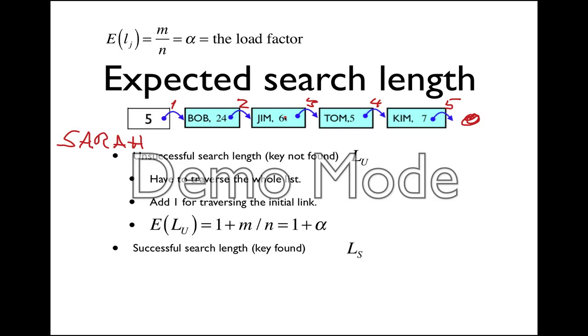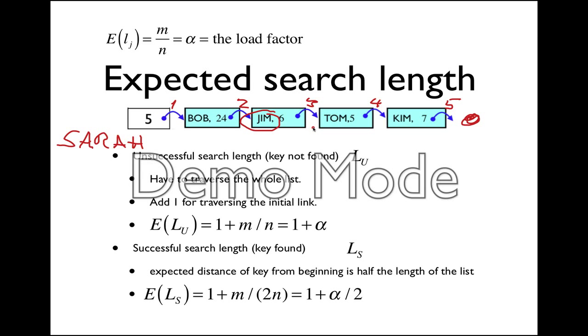What about the successful search? The successful search is for something like Jim. For Jim we just have to follow two pointers, and on average we'll have to go through about half the list in order to find any element in the list. That's the expected value of the length of the list, and we basically get something very similar to what we got before. But in this case, instead of one plus the load factor, it's one plus half the load factor.